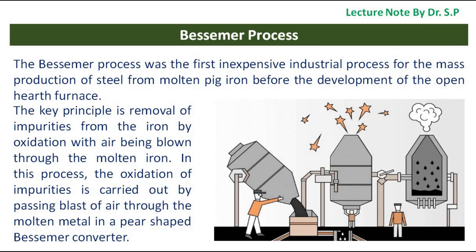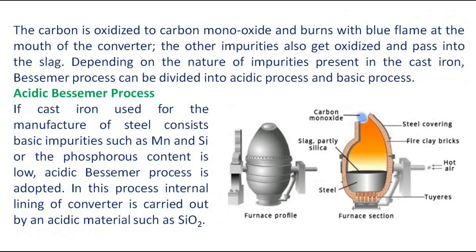In this process, the oxidation of impurities is carried out by passing a blast of air through the molten metal in a pear-shaped Bessemer converter. The carbon is oxidized to carbon monoxide and burns with a blue flame at the mouth of the converter. The other impurities also get oxidized and pass into the slag.